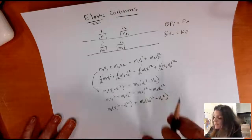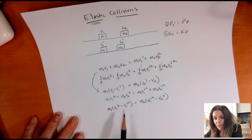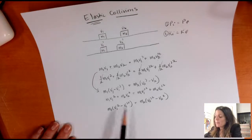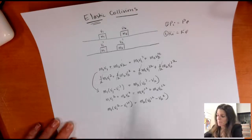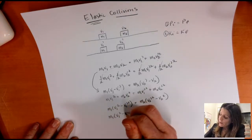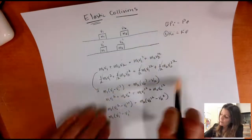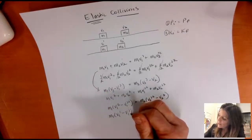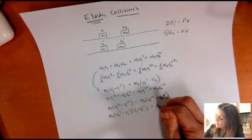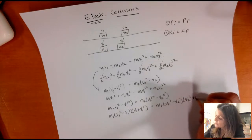Now pause and think: when you have a difference of squares, how can you write it? You might have realized that a difference of squares factors as a plus and a minus. So M1 times (V1 minus V1 prime)(V1 plus V1 prime) equals M2 times (V2 prime minus V2)(V2 prime plus V2).